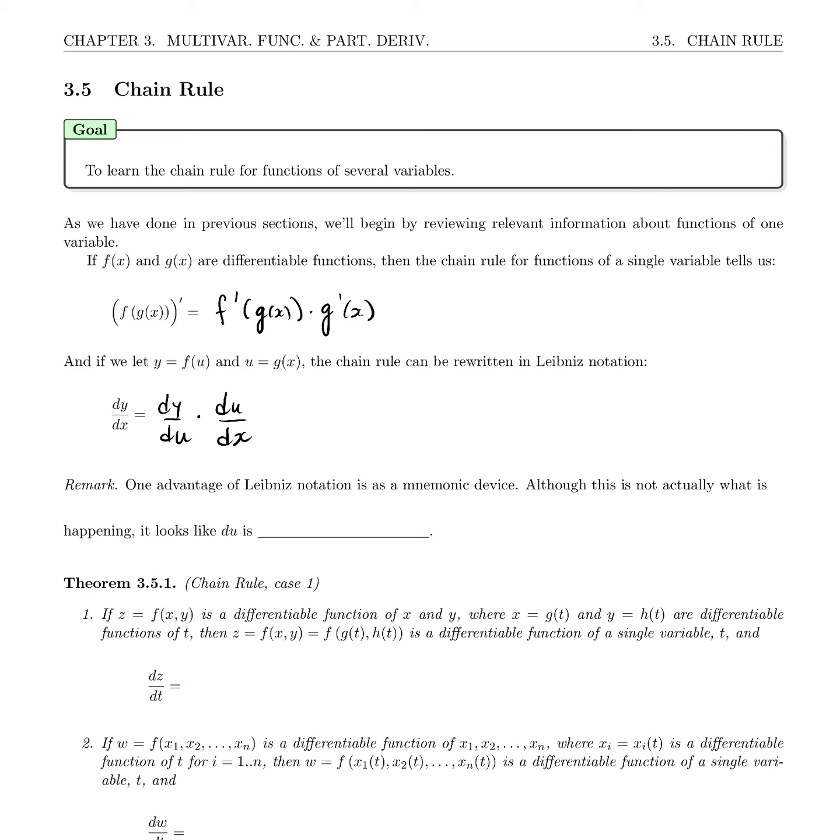One advantage of Leibniz notation is as a mnemonic device, a memory aid. It helps us remember how the chain rule goes because, although it's not actually what's happening, it looks like the du cancels out and we get dy/dx. That is not at all what's happening, but it looks like the du is canceling.